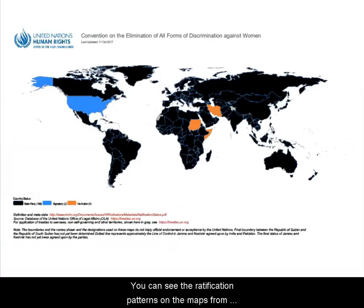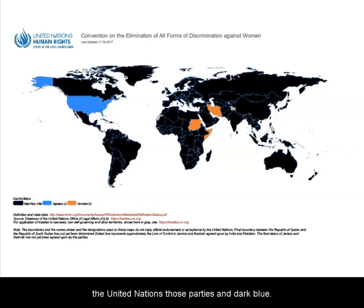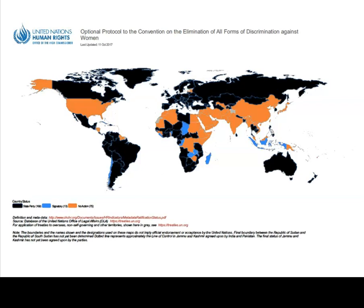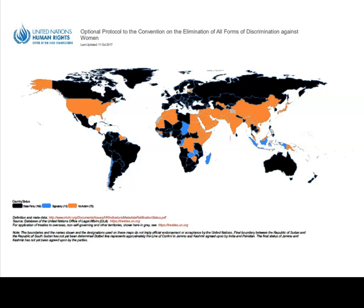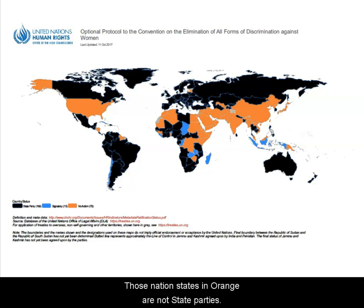You can see the ratification patterns on the maps from the United Nations. Those parties in dark blue are state parties to CEDAW. Likewise, for the Optional Protocol, the states in dark blue are parties to the OP, whereas those nation states in orange are not state parties.